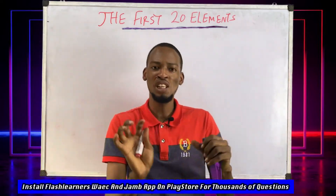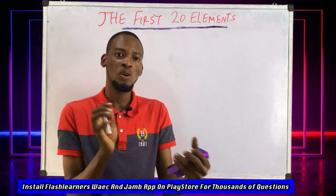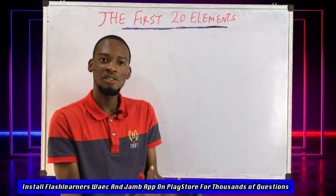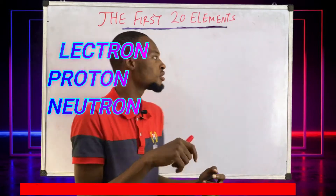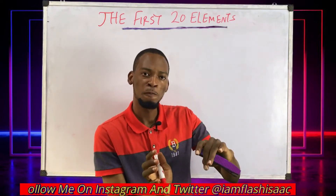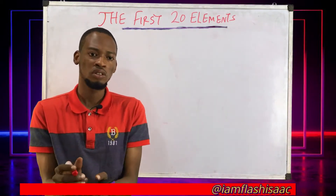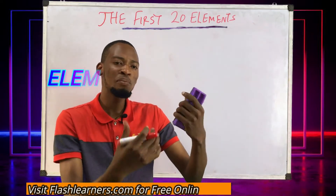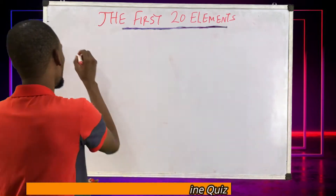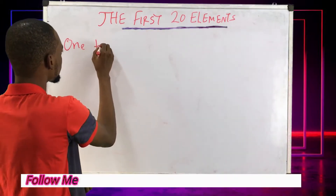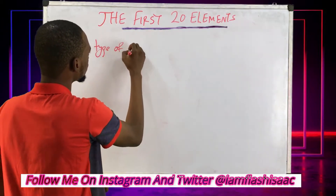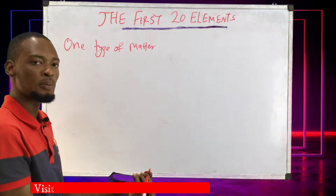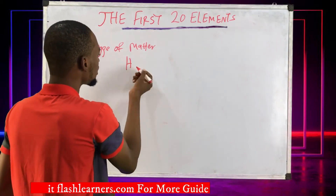I explained that the atom is made up of other particles called subatomic particles, and they are electrons, protons, and neutrons. Now, matter can either be pure or impure. Pure substances are also called elements. Elements are substances that are made up of only one type of atom. An example is hydrogen.